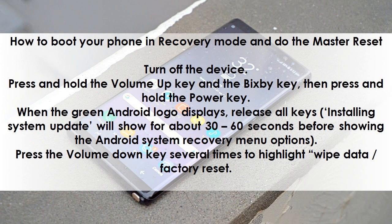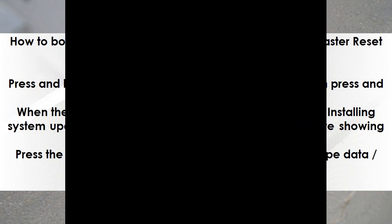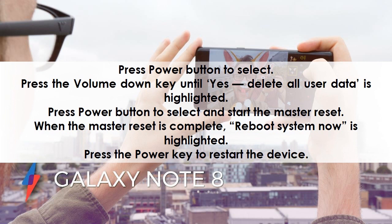How to boot your phone in recovery mode and do the master reset: Turn off the device. Press and hold the volume up key and the Bixby key, then press and hold the power key. When the green Android logo displays, release all keys. 'Installing system update' will show for about 30–60 seconds before showing the Android system recovery menu options. Press the volume down key several times to highlight 'wipe data/factory reset.' Press the power button to select, then press the volume down key until 'yes — delete all user data' is highlighted.